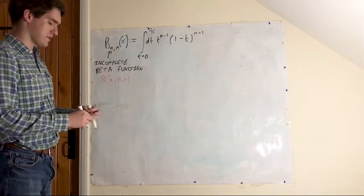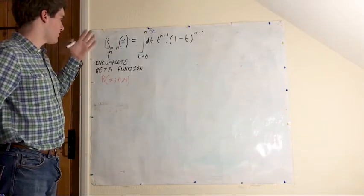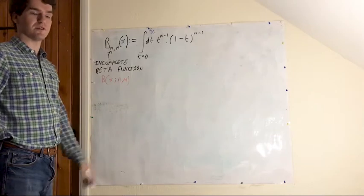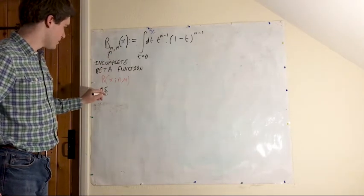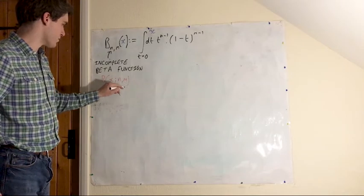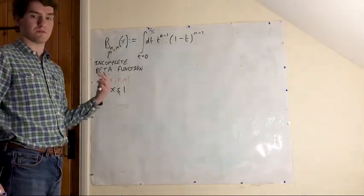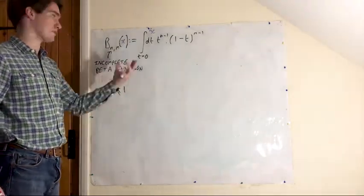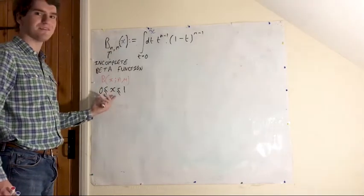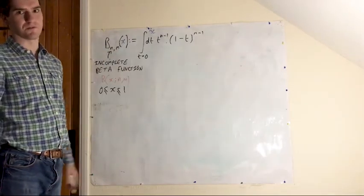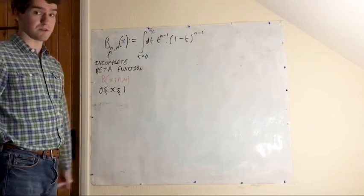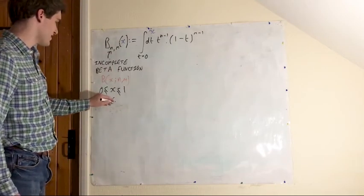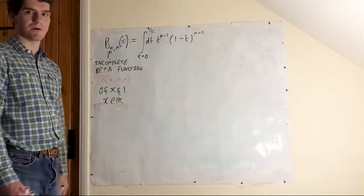And the other things I want to say is that the incomplete beta function is completely well defined for x going between 0 to 1. And that's the limits to which I'm going to be using, or rather this is the domain for which I'm going to be using the beta function for. And secondly, it's differentiable over this range as well. And finally, x is a real number.